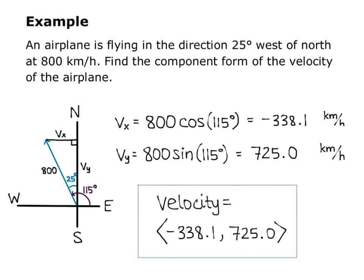And so that gives me the component form of the velocity as angle bracket negative 338.1 comma 725.0. So that's breaking down our velocity into a horizontal and vertical component. We do this a lot with forces and velocities to figure out how much of the force is pulling in a certain direction.